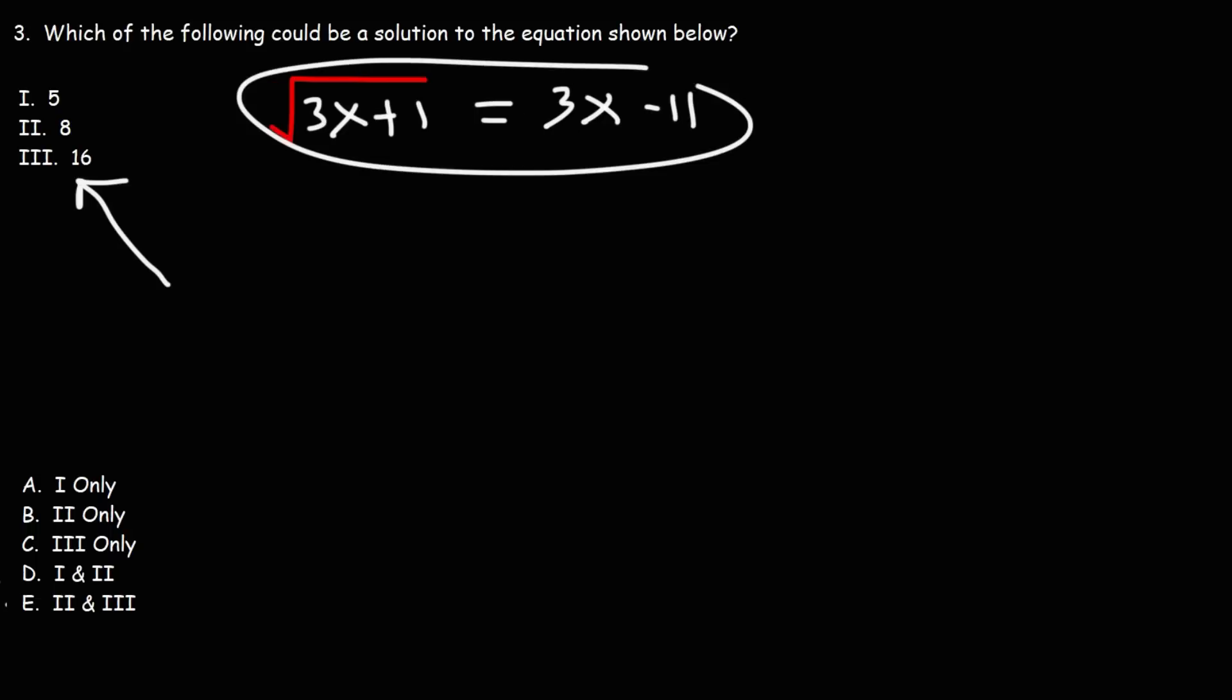Now, this equation is going to take time to solve. And so, because this is a timed test, you want to find the fastest way to get the right answer. In this case, it's not solving the equation, but it's better to plug in numbers because you can do it a lot faster. So let's start with the first one, 5. Let's replace x with 5.